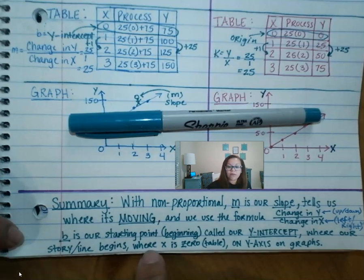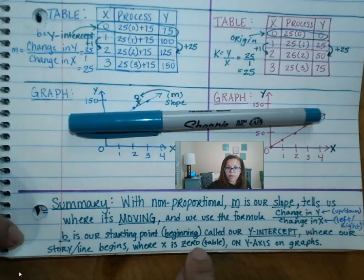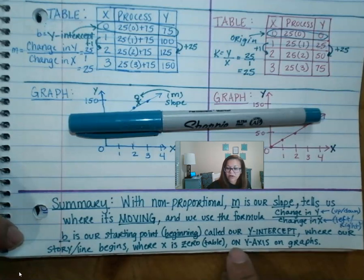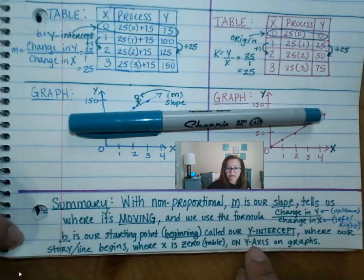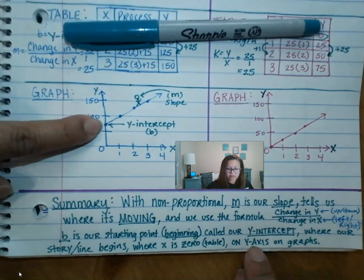It's always going to be where X is zero on our table. Hopefully they give it to us. Or if we see it on a graph, it's always going to be sitting on our Y-axis, just like that.